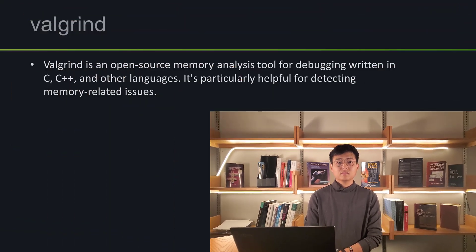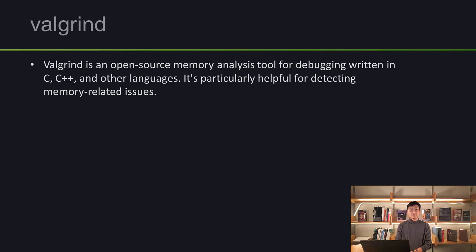Now that I've introduced memory leaks through memory allocation, I want to introduce a debugging tool you can use to prevent memory leaks — this is Valgrind. Valgrind is an open source tool that is widely available, mainly used within C and C++, and we use it to help us find memory leaks.